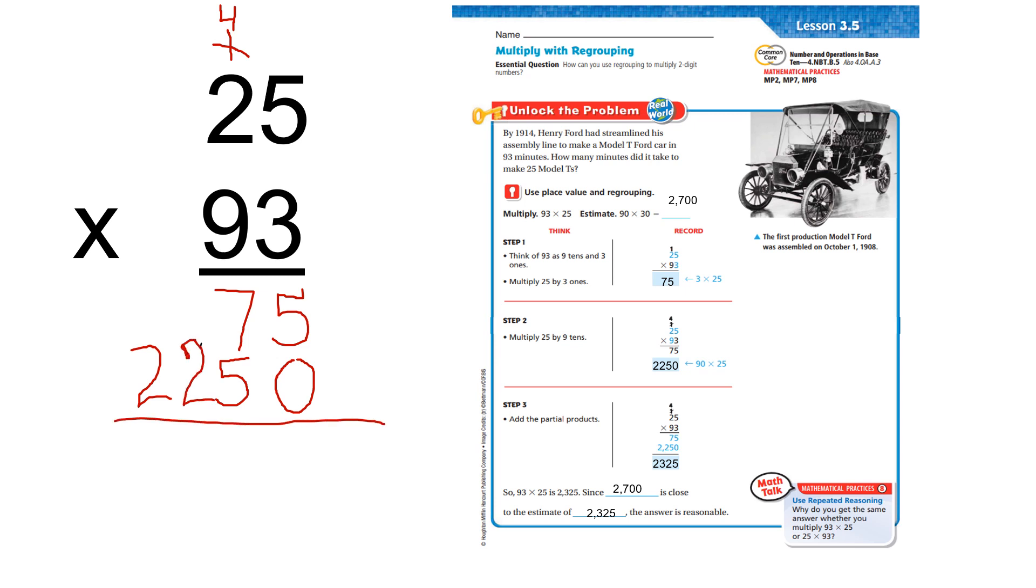So, now, I'm going to add. 5 plus 0 is 5. 7 plus 5 is 12. Carry that 1. 2 plus 1 is 3. 2 plus nothing is 2. So, my answer is 2,325. So, 93 times 25 is 2,325. And since 2,700 is close to the estimate of 2,325, the answer is reasonable.